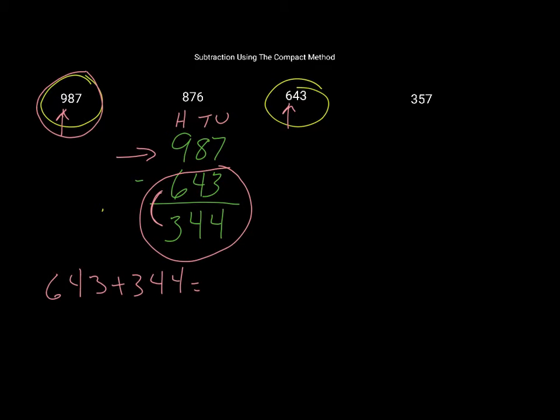That should give me 987. Let's just work it out: 3 and 4 is 7, 40 and 40 is 80, and 600 and 300 is 900. So 987, that's what I should have, so my working out is correct.